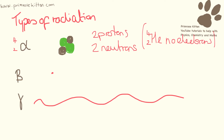A beta particle has a mass of zero and an atomic number of minus one. This isn't going to be on the periodic table, but if we think about this, it is just an electron. And then gamma radiation is more of a wave.